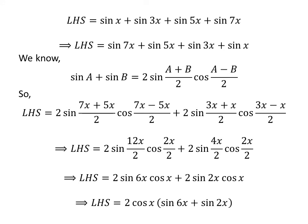Taking the common factor 2 times cosine of x out gives us: left-hand side is equal to 2 times cosine of x times (sine of 6x plus sine of 2x).